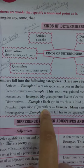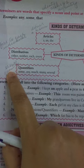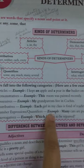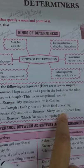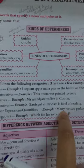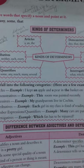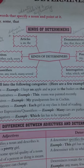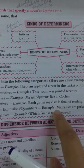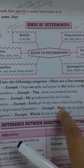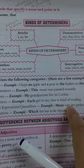For quantifiers: Many cars are parked here. 'Many' shows quantity — it is not a definite number, but it is showing the quantity of cars.